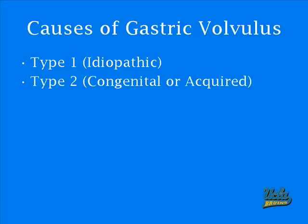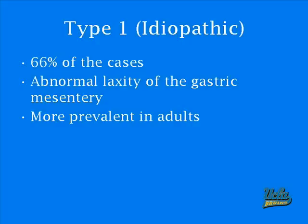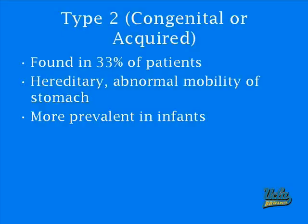So what actually causes gastric volvulus? Gastric volvulus is classified into two types of causes: Type 1 idiopathic or Type 2 congenital or acquired. Type 1 idiopathic constitutes about 66% of all gastric volvulus cases. It refers to the abnormal laxity of the gastric mesentery and is seen more prevalently in adults. Type 2 constitutes about 33% of all gastric volvulus cases. It is hereditary, refers to the abnormal mobility of the stomach, and is more prevalent in infants than adults.